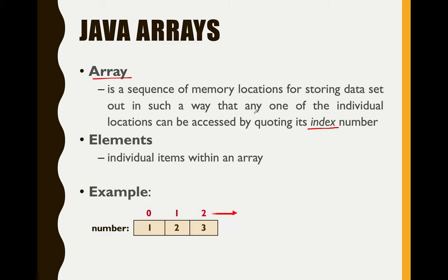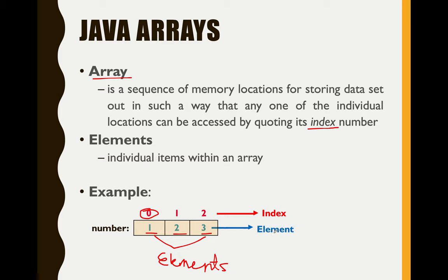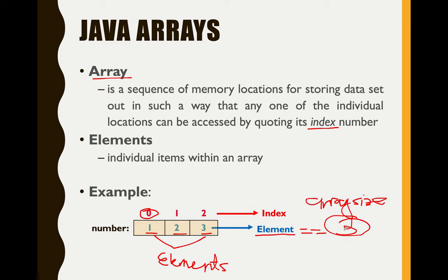Here is the example I mentioned earlier. This is our index — our index normally starts with zero. We have a data set: one, two, and three. These three data sets are what we call elements. You'll notice in our data representation here that the array size is actually three, and the number of elements is equivalent to the array size, which is three.